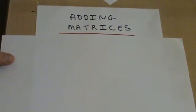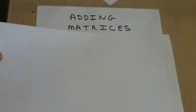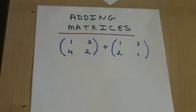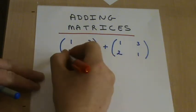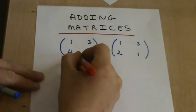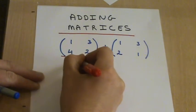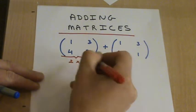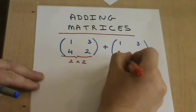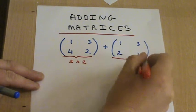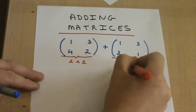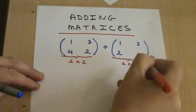Here we are going to look at adding two matrices. The two matrices we are going to add together are two 2x2 matrices. This matrix has got two rows and two columns, and this matrix has also got two rows and two columns.